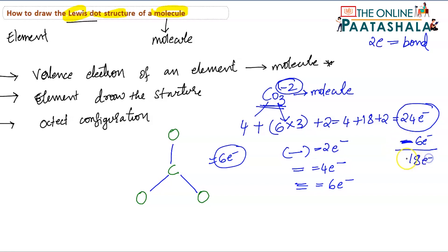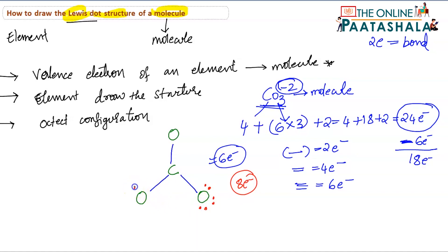Each atom should be attaining octet configuration. For each oxygen, 2 electrons are already there from the bond, and to attain octet we need 8 electrons total, so we need to arrange another 6 electrons around each oxygen. For all three oxygens, that is 6 times 3 equals 18 electrons filled. So all 18 remaining electrons are used up.